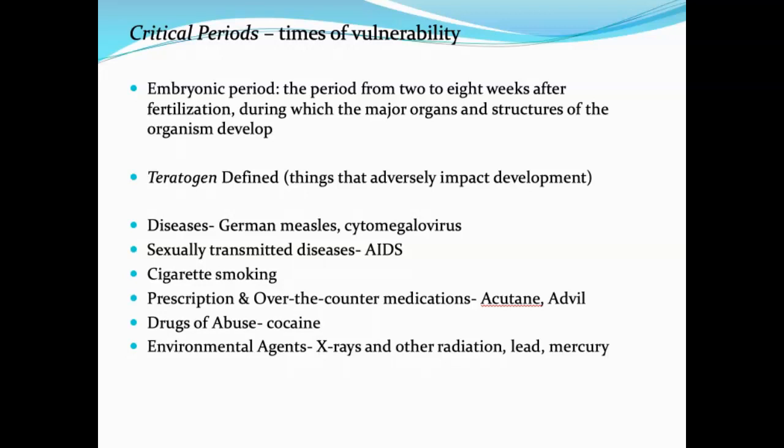Anything in high enough amounts can become a teratogen. A teratogen is something that adversely affects development. Common teratogens include diseases, sexually transmitted diseases, smoking, prescription medications, over-the-counter medications, substances of abuse, environmental issues like lead and X-ray radiation. A teratogen is any environmental factor that has an adverse impact on development while the baby is in the uterus, and the impact is typically worse during the critical period.